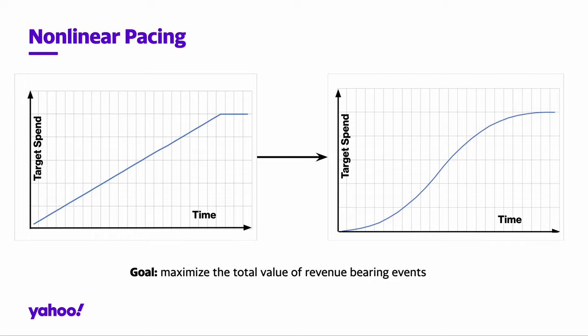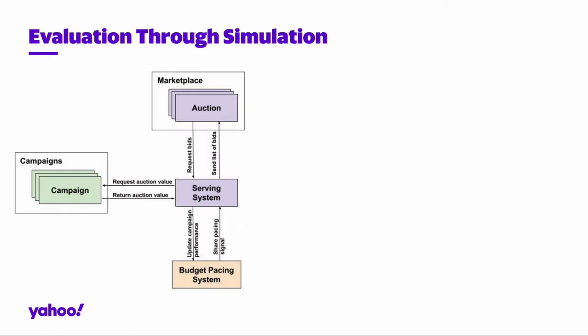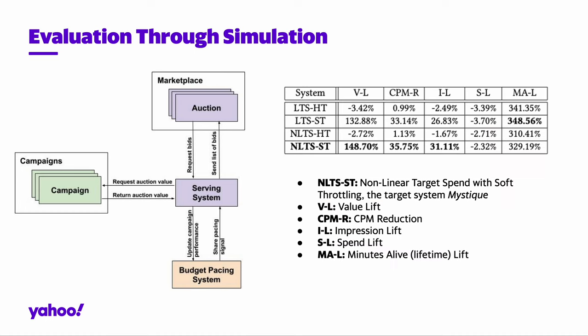The goal is to maximize the total value of revenue bearing events. To compare Mystique's performance to other counterparts, we implement a simulation framework that approximates the real marketplace and allows us to compare different budget pacing systems. The simulation results show that Mystique outperforms all other tested pacing systems in most metrics, and most importantly, in our target metric, the value of revenue bearing events. Thank you for listening.